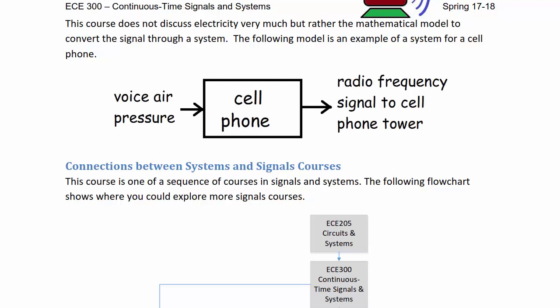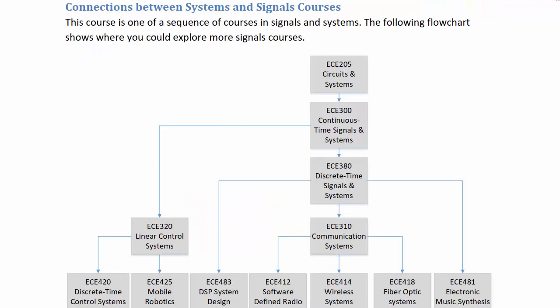Now let's explore some of the connections between this course and other courses in your curriculum. The starting course was ECE 205 Circuits and Systems, which is a bridge course between circuits and signals. You did a little bit of Laplace analysis of circuits in there, and also system properties to get you ready for ECE 300. From ECE 300 Continuous Time Signals and Systems, you can go on to Linear Control Systems, ECE 420 Discrete Time Control Systems, and ECE 425 Mobile Robotics. I teach Control Systems and Mobile Robotics, and Dr. Throne teaches ECE 420.